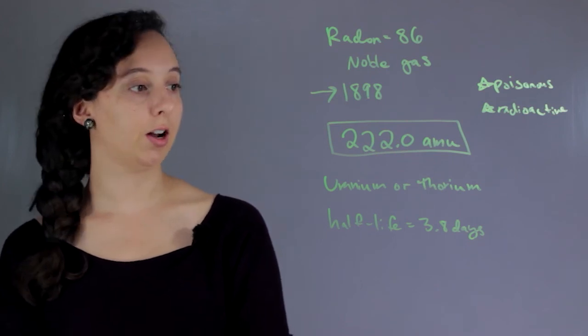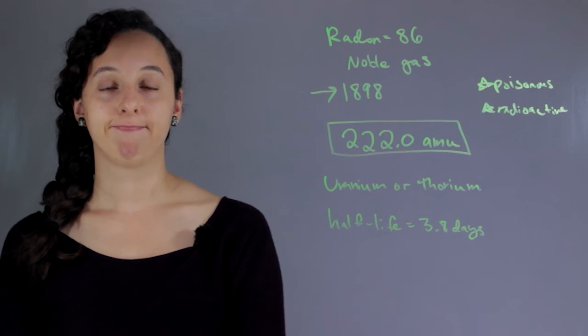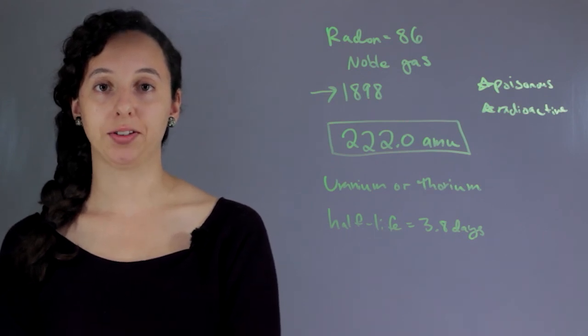So the molar mass of radon is 222 AMUs and never get near it. I'm Robin Higgins, and this is what is the molar mass of radon?